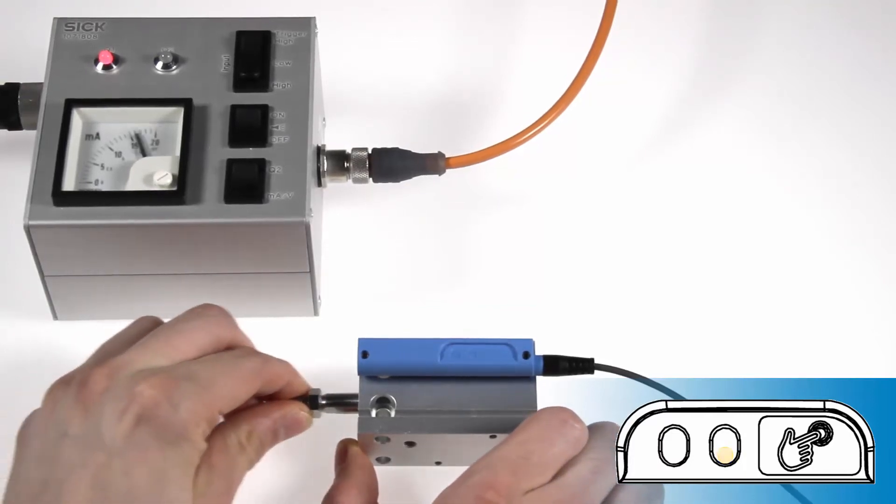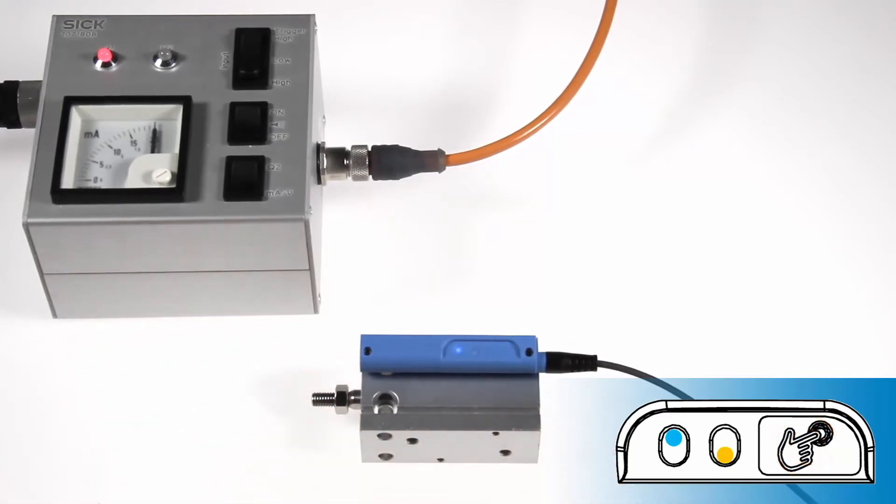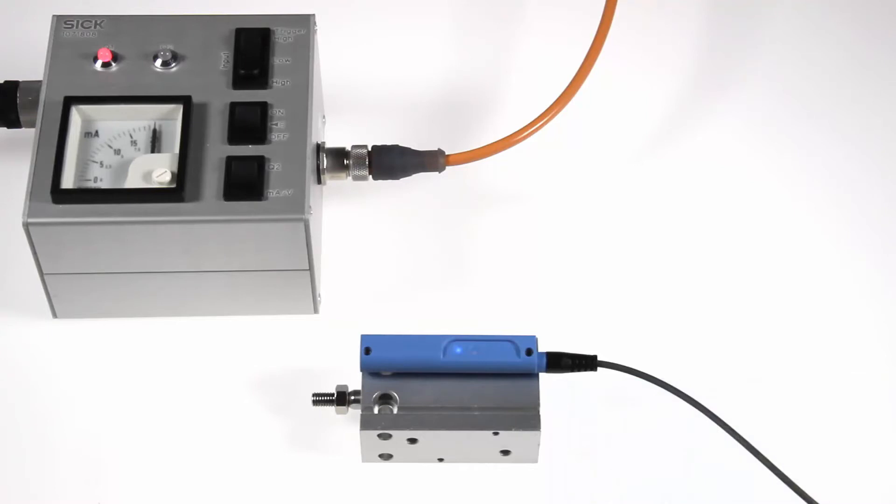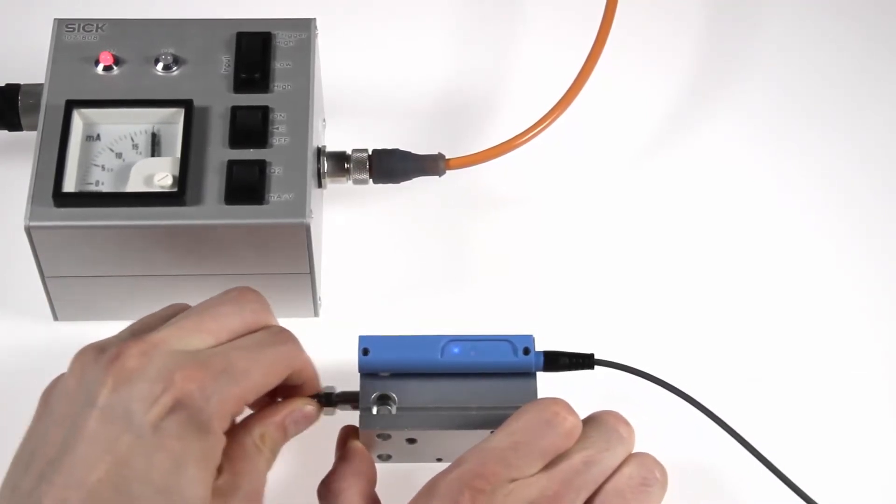Now push the piston to the end of the measuring range and press the keypad once again. The yellow LED stops flashing and the end of the measuring range is set. The analog output now gives a 4 to 20 mA signal in the set range.